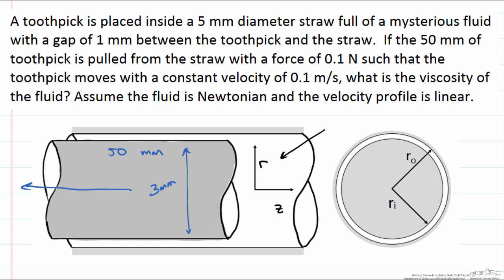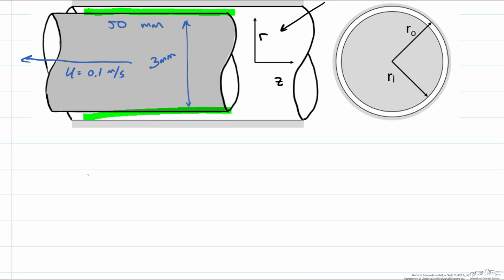We know that the velocity which I am going to write as u is equal to 0.1 m per second. So let us draw what is occurring in this fluid space between the toothpick and the straw. So I am going to draw the space that is highlighted in green. If we label the top surface as the straw boundary and the bottom surface as our toothpick.